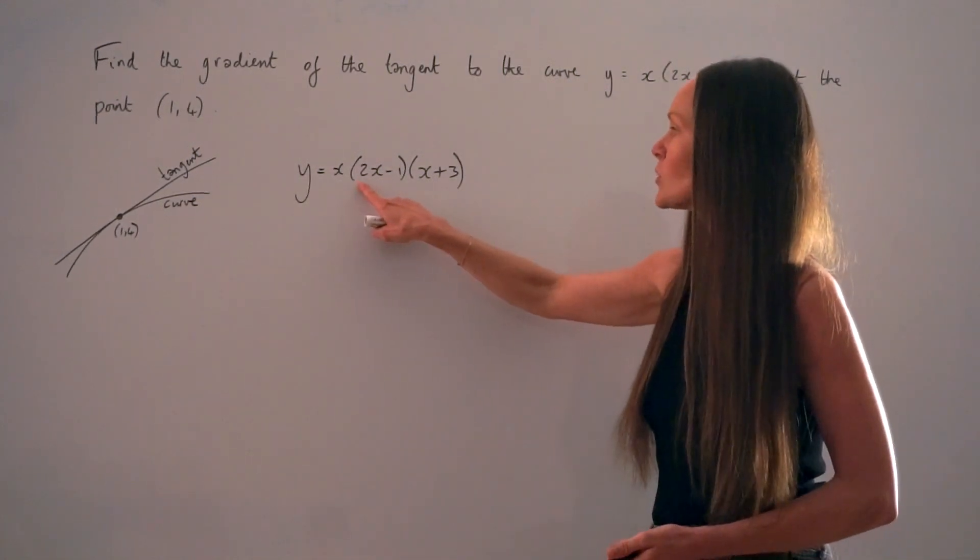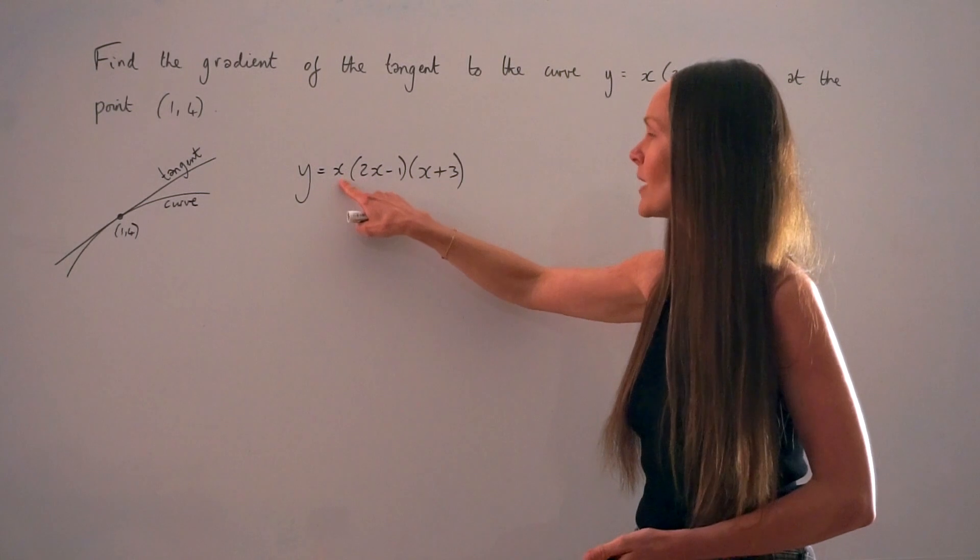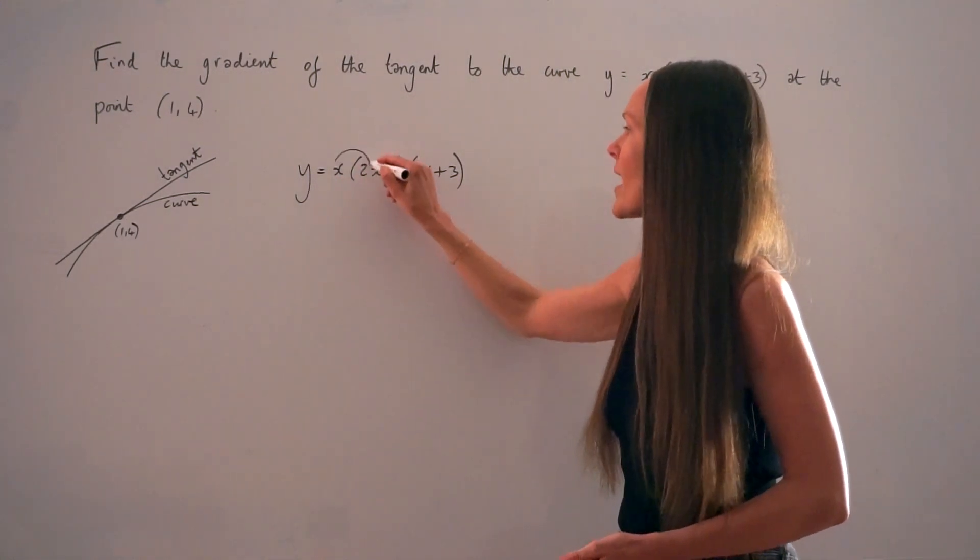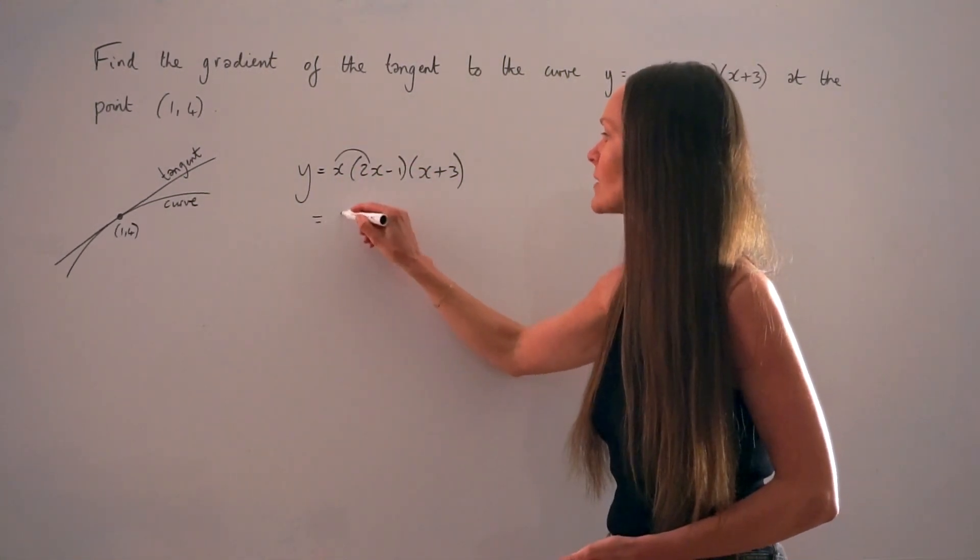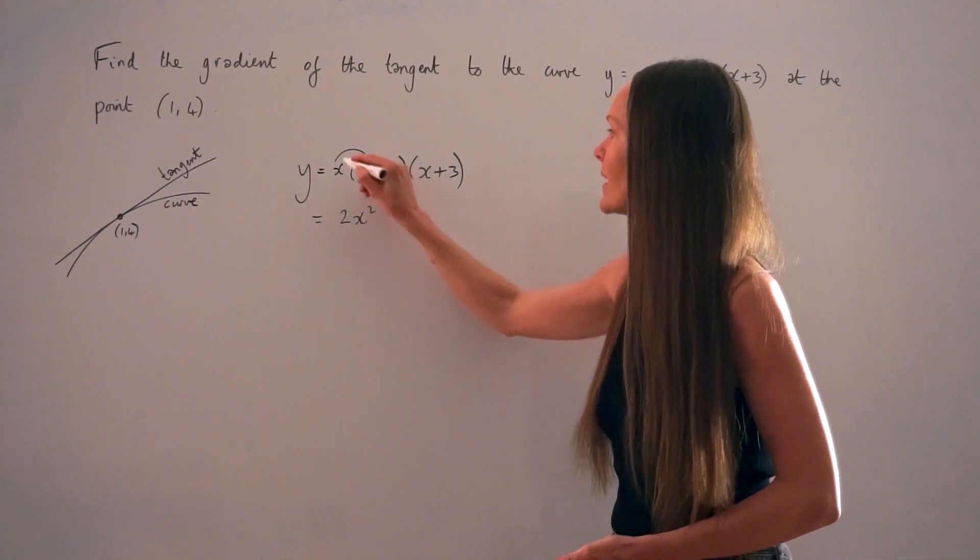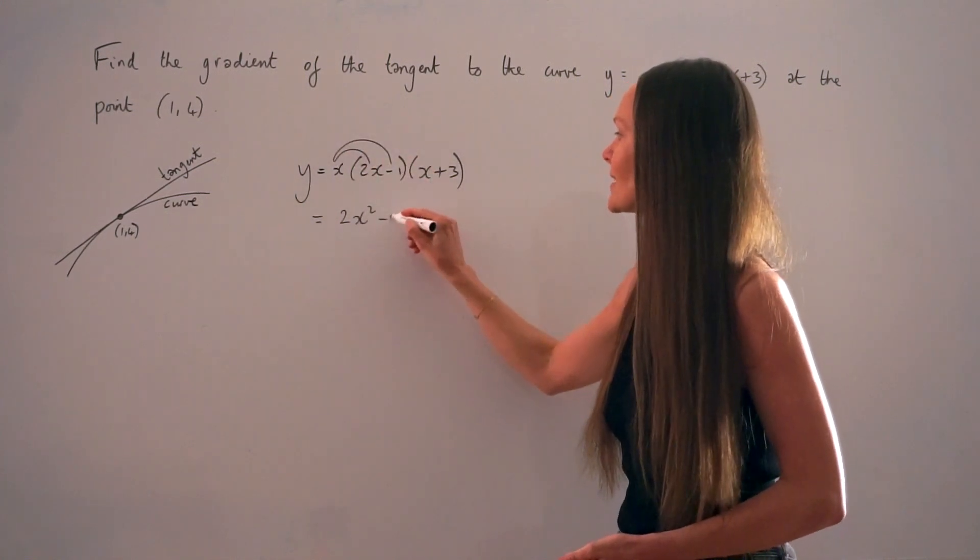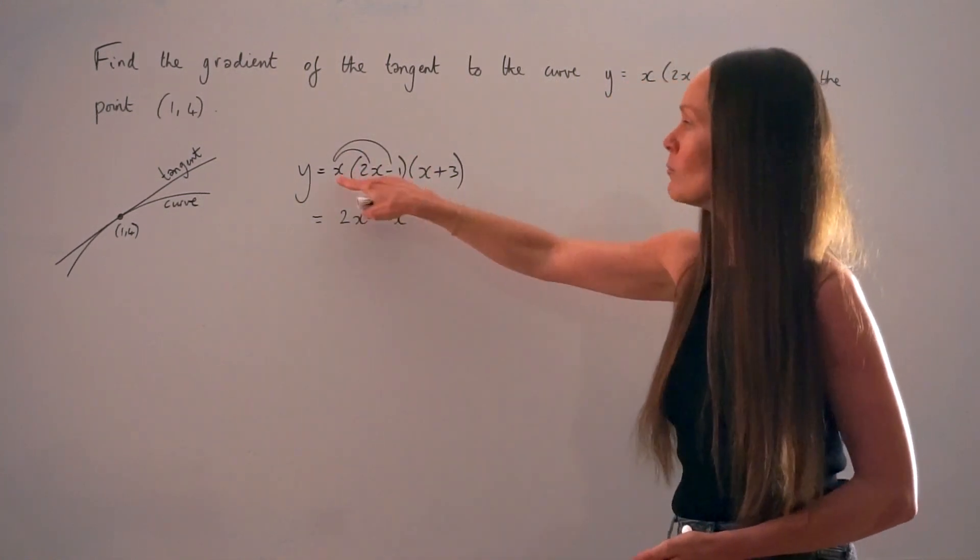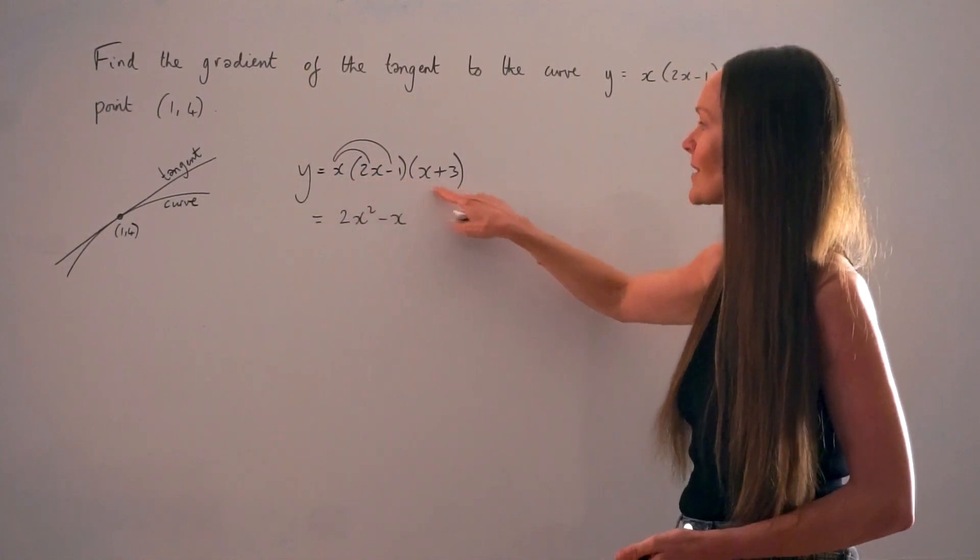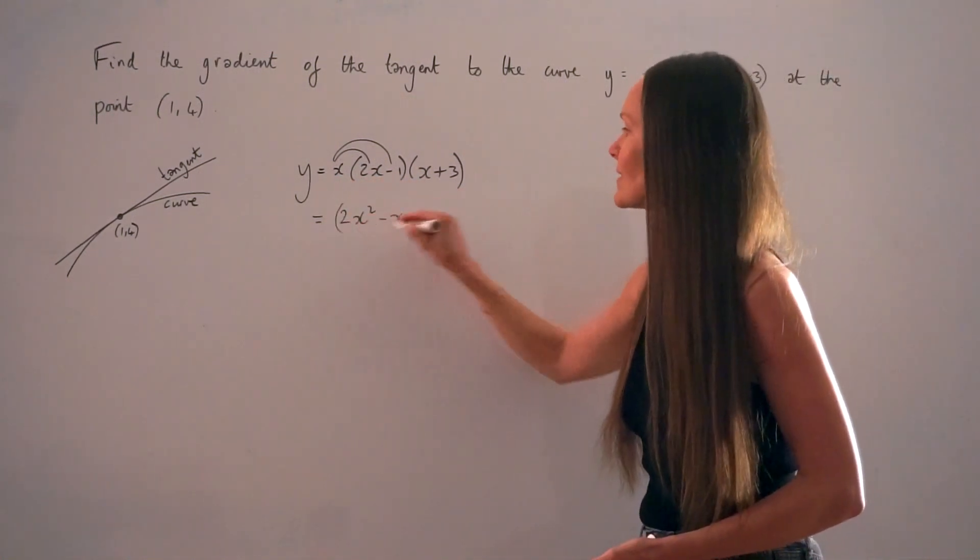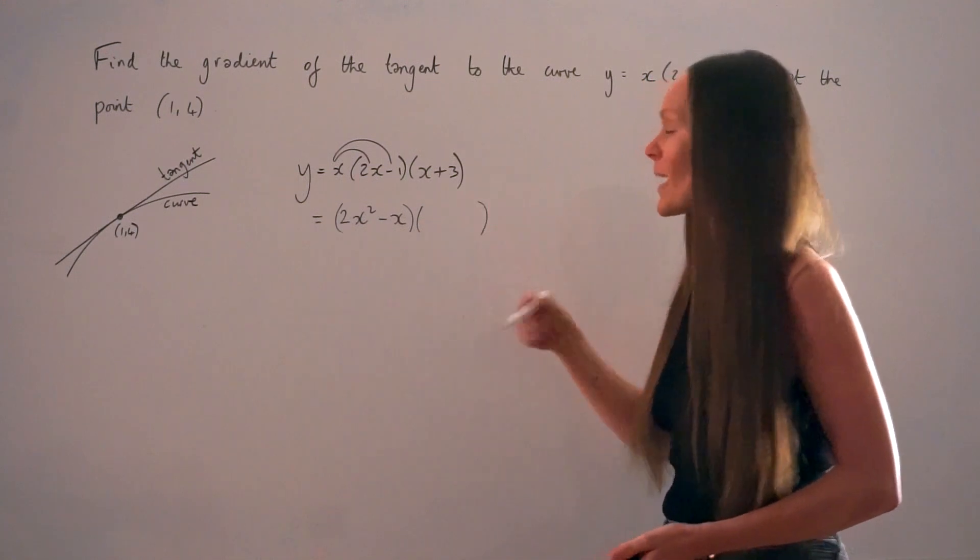So I'm going to multiply these brackets here by the x term at the front. So the x multiplied by 2x is 2x squared, and x multiplied by negative 1 is negative x. Now remember, you're multiplying all of this with the second bracket, so you must leave this in brackets and expand again.